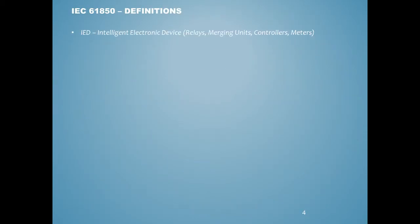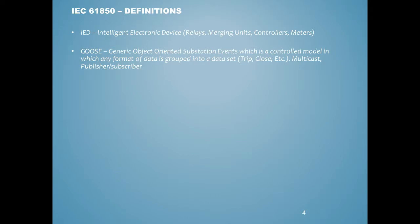A few definitions: IED — Intelligent Electronic Device — such as relays, merging units, controllers, or meters. What's a GOOSE message? It's a Generic Object-Oriented Substation Event — a controlled model in which formatted data is grouped into a data set. It's a multicast messaging system, publisher-subscriber based, where an IED publishes a message onto the network and any device configured to subscribe can see that message. These usually cover tripping, close, breaker failure, and similar substation messaging.